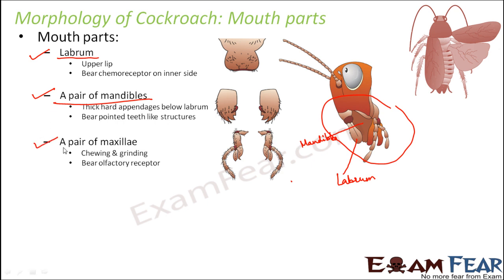Next is a pair of maxillae. The maxilla is the structure visible in the figure, with one on each side of the mouth. They are used for chewing and grinding. Importantly, they bear olfactory receptors, giving the cockroach a sense of smell. So the mouth parts together can detect chemicals, taste, and smell — making them important sensory structures.